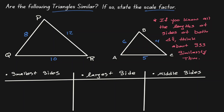The smallest side on the left triangle is PQ with the length of 8, and the smallest side on the right triangle is BC with the length of 4. So let's find this proportion by doing PQ divided by BC — that's 8 over 4, which is 2.